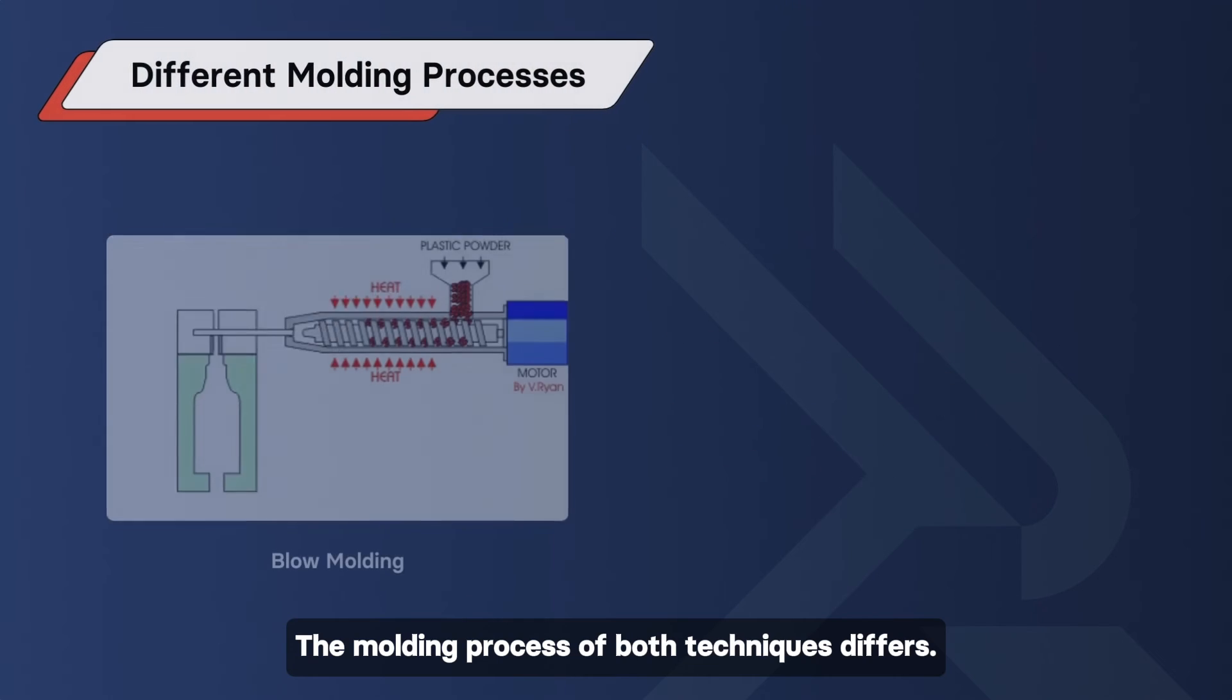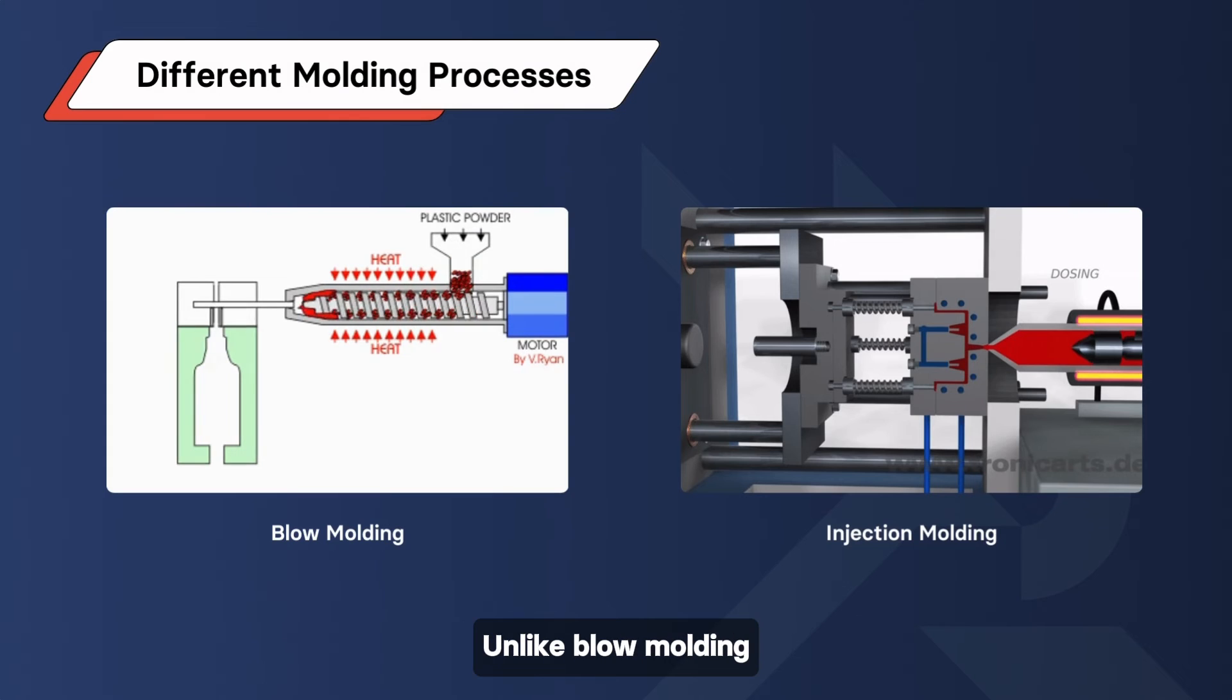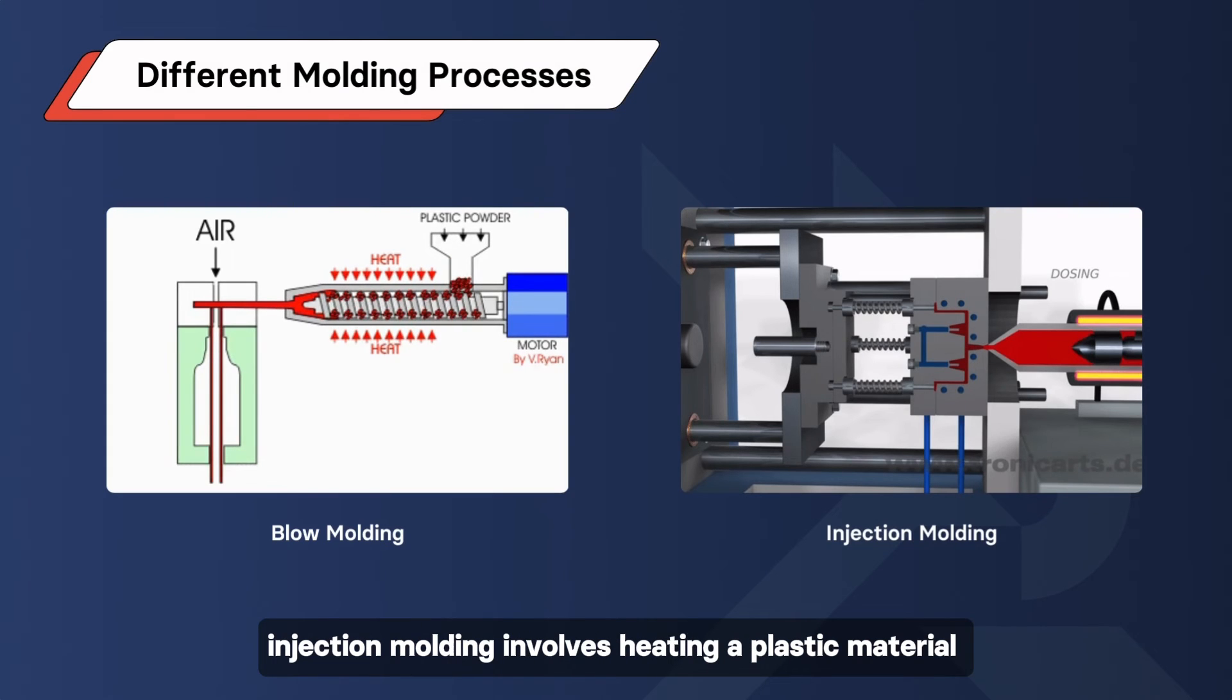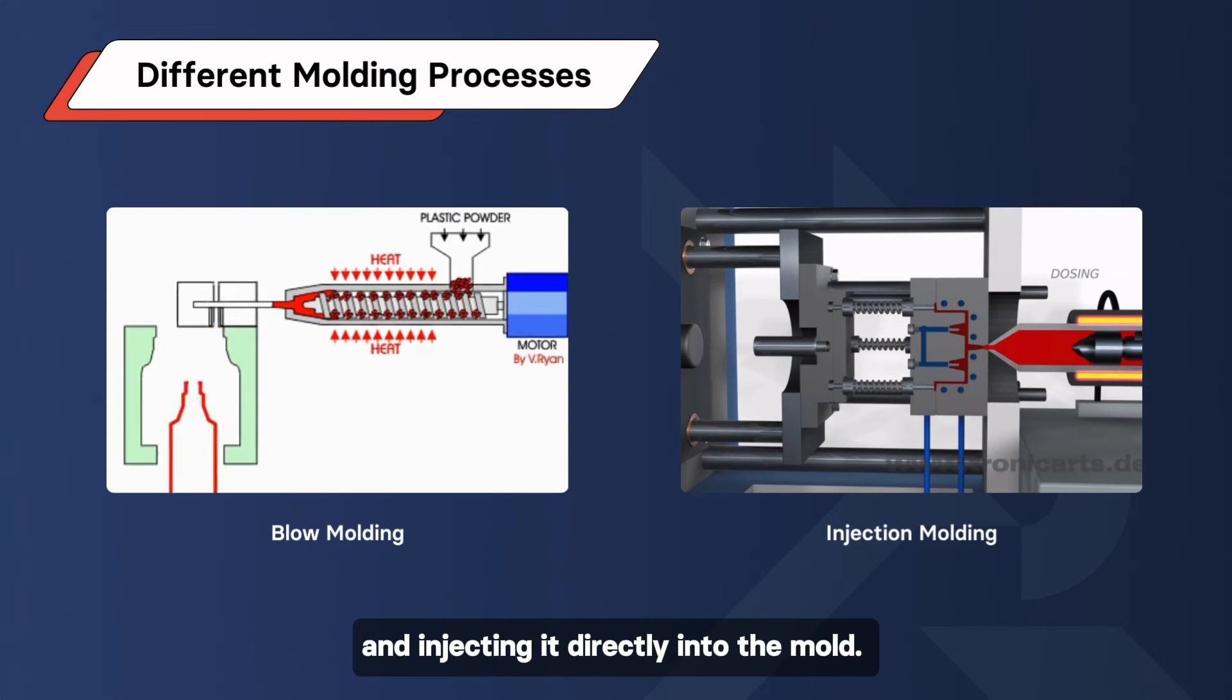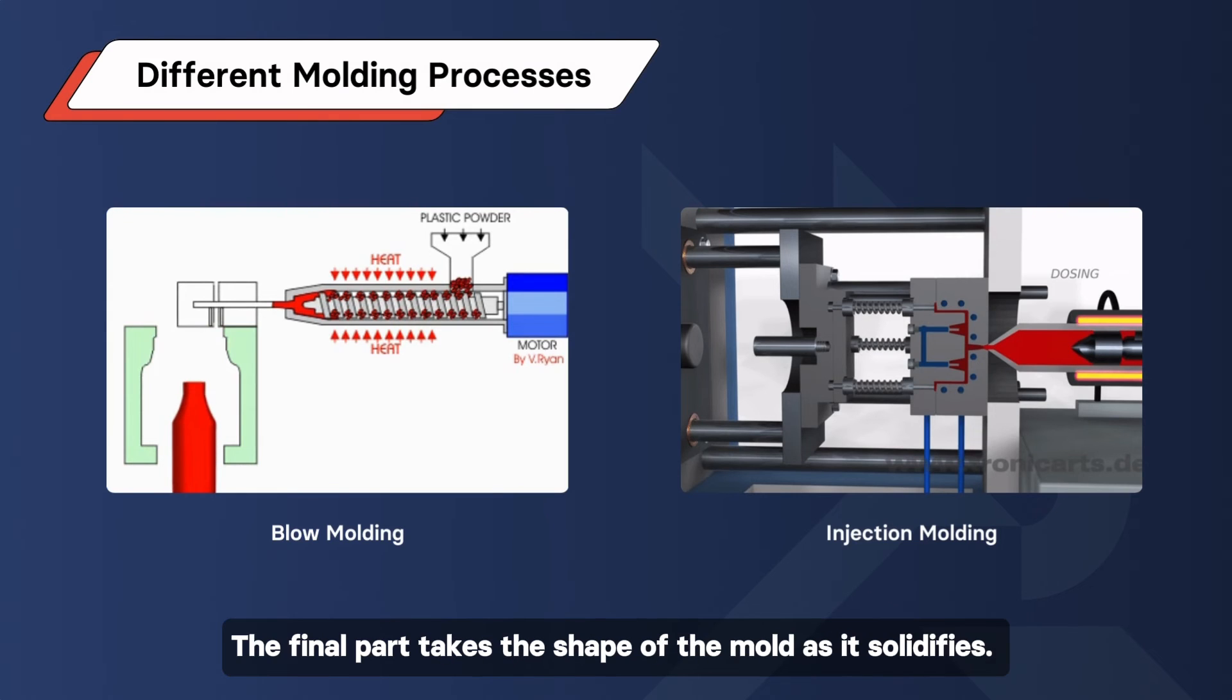The molding process of both techniques differs. Unlike blow molding, injection molding involves heating a plastic material and injecting it directly into the mold. The final part takes the shape of the mold as it solidifies.